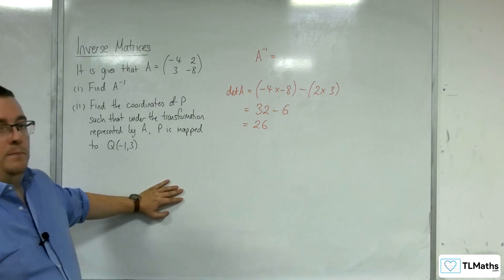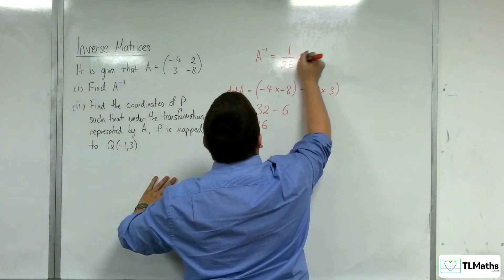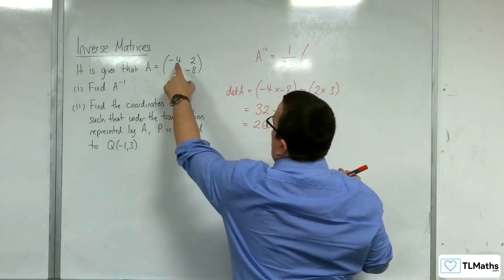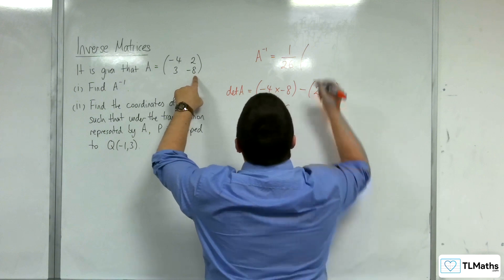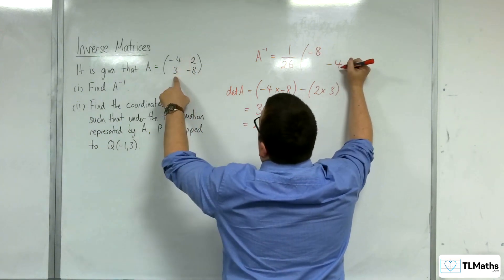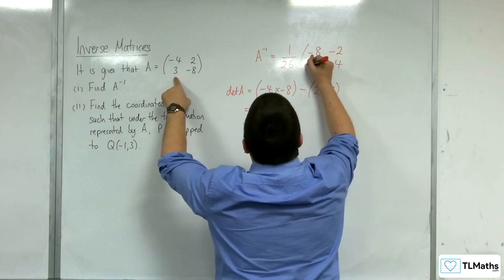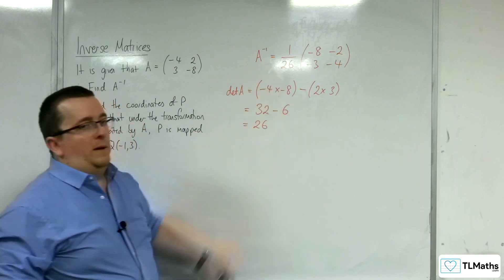So, the inverse matrix of A is going to be 1 over 26, and then the entries minus 4 and minus 8 switch around. So, we get minus 8 and minus 4, and the 2 and the 3 change sign. And so this is the inverse matrix of A.